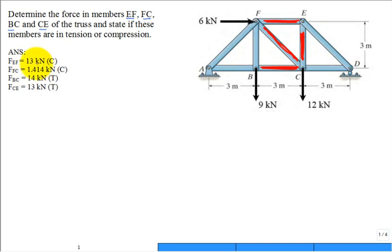You want to get accustomed to what exactly you're looking for, what units are needed, and how to describe whether a member is in tension or compression. In this textbook, we use parentheses C for compression and parentheses T for tension. With the method of sections, we often first solve for the entire truss reactions at the supports.